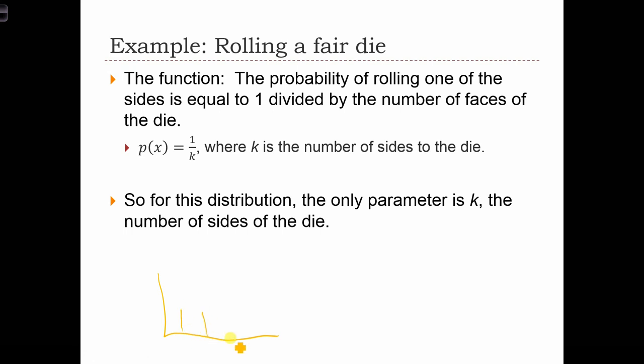Or really, this is a discrete distribution function. So we have the six lines, one through six, for the six different outcomes. Each of these has a value of 1/6.